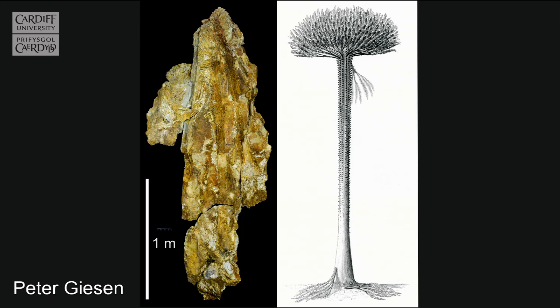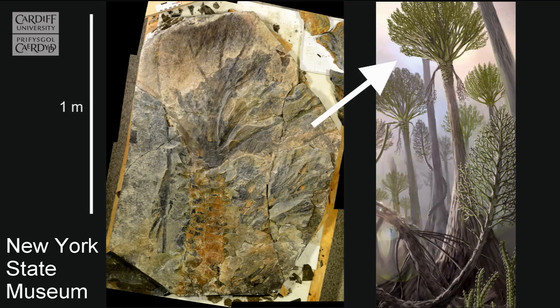This is because, both in Germany working with Peter Giesen and in New York State working with Bill Stein and colleagues at the New York State Museum, we've actually found more or less complete trees. Some of these are incredibly large pieces of rock, so we can be increasingly confident that our reconstructions of individual plants like the cladoxylopsids are more and more accurate and look very much like they actually did when they were alive.